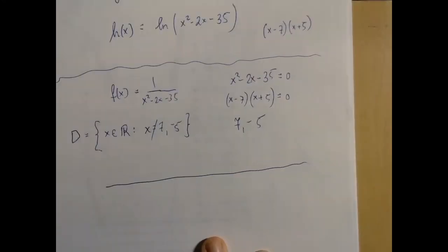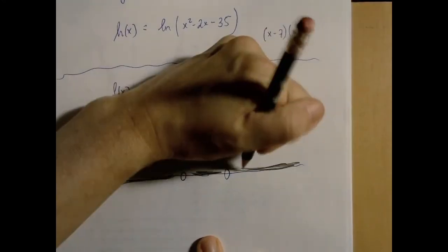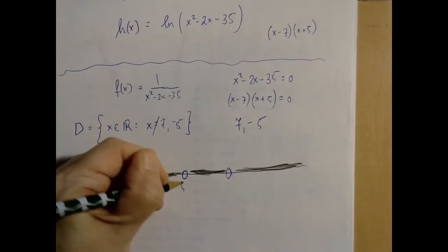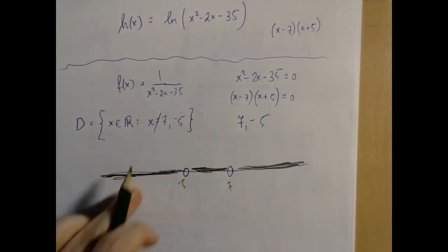By the way, if we go back to the first one, the solution set is almost every real number. We just lose two points, which in interval notation that's a little weird. We are going to have to go from negative infinity to negative 5, then from negative 5 to 7, and then from 7 to infinity. So there are three pieces.